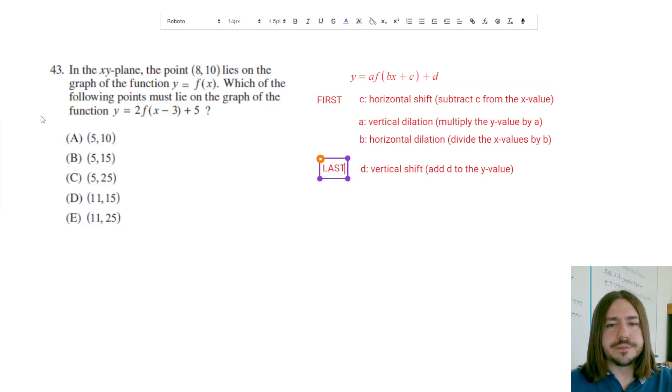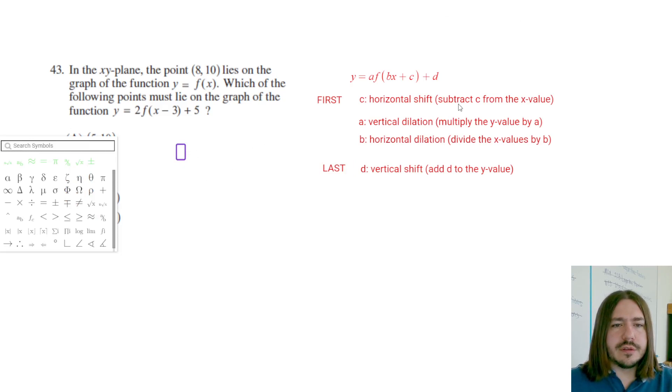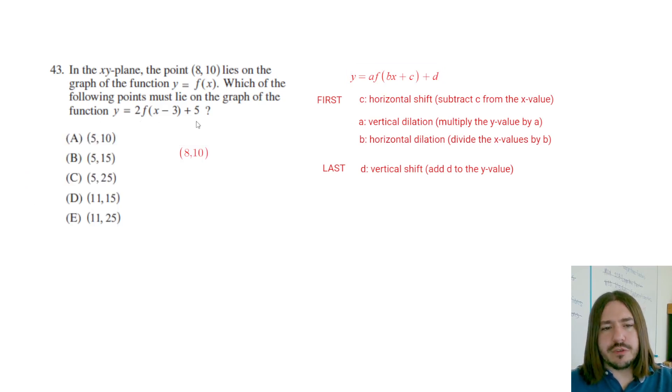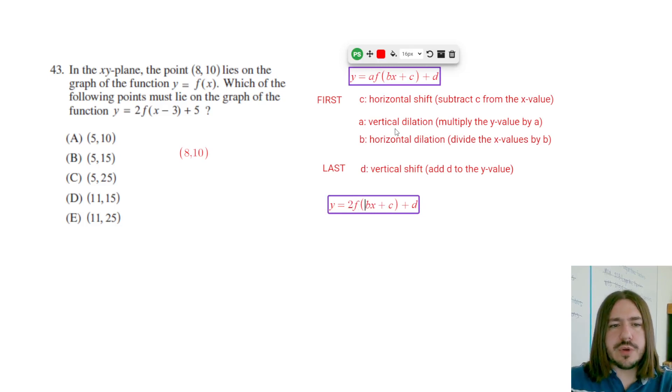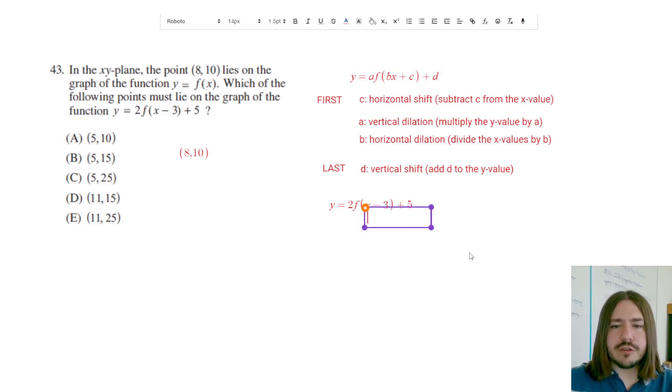So if our coordinate is (8, 10), that's what we started with. First we're going to take care of the horizontal shift. So we're going to do the opposite of what's being done here. If we've got, let's go ahead and write this out. We've got 2f of (x minus 3) plus 5. These are the different transformations we're going to do.